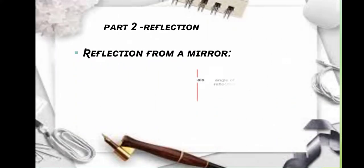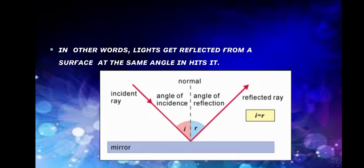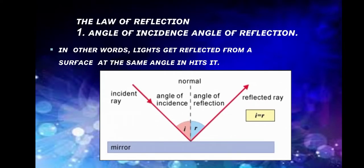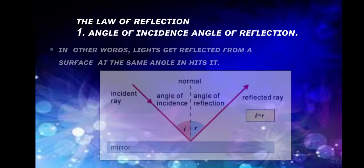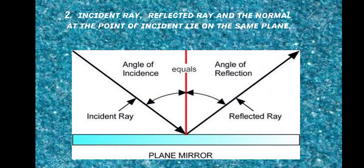Part 2: Reflection. The Laws of Reflection. First Law: the angle of incidence and angle of reflection are always equal. In other words, light is reflected from a surface at the same angle it hits. Second Law: the incident ray, reflected ray, and the normal at the point of incidence lie on the same plane.